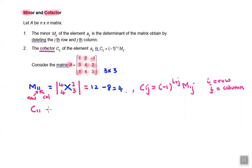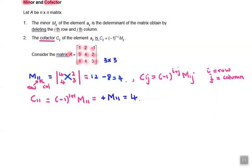For example, C11 is equal to negative 1 raised to power 1 plus 1 times M11. When negative 1 raised to 1 plus 1 is equal to positive M11, therefore C11 is equal to 4.